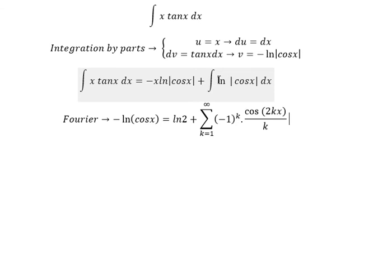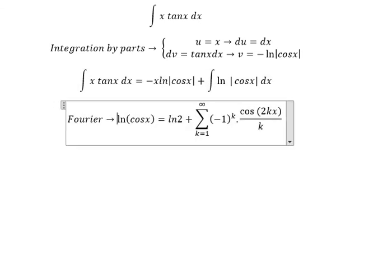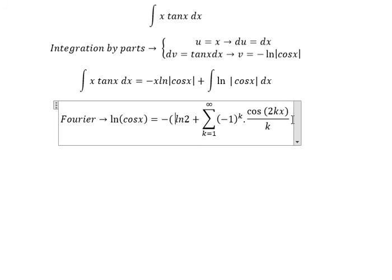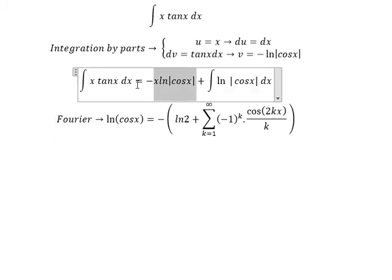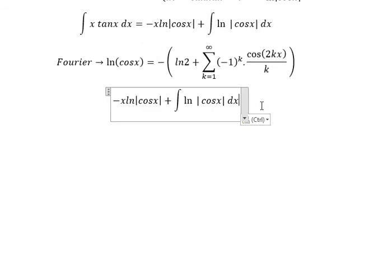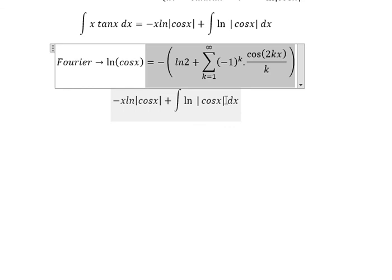So now because we have the negative, we put the negative on the right side, making it negative ln 2. So we substitute this into our integral.